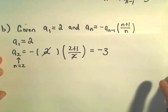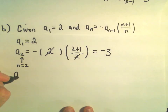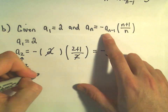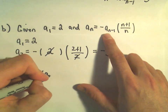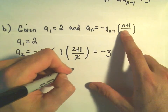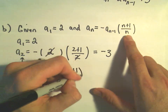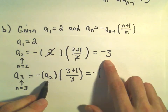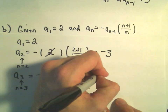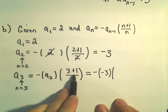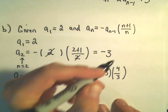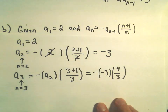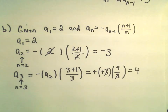To get our third term, a sub 3, our n value is going to be 3. The formula says we get the negative of the a sub 2 value, and everywhere there's an n I'm just plugging in 3. We've figured out that a sub 2 was negative 3. So then 3 plus 1 gives us 4 over 3. The two negatives make a positive, the 3s cancel out, so our third term is positive 4.